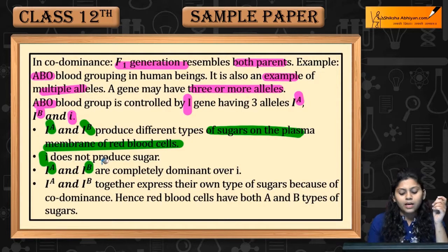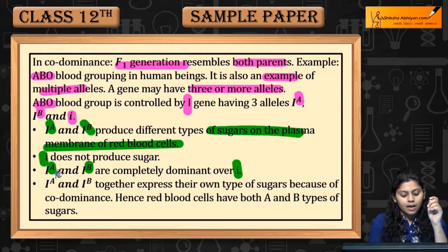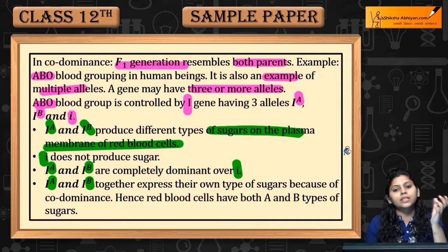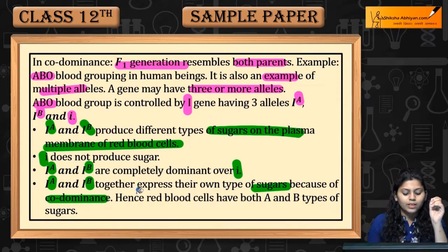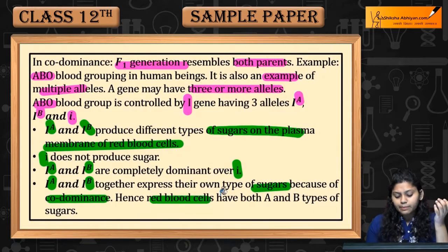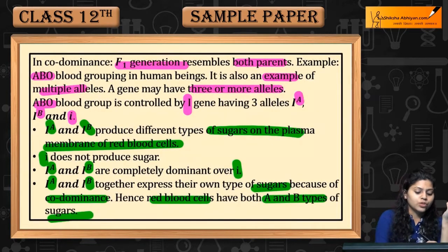IA and IB are completely dominant over i. IA and IB together express their own type of sugars because of codominance. Hence, red blood cells have both A and B types of sugar when both IA and IB alleles are present.